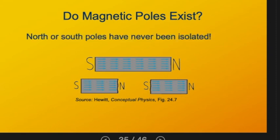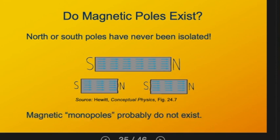It turns out that we've never been able to do that. That's not to say it definitely can't be done, but most theories of magnetism that physicists use nowadays indicate that it can't happen—that north and south poles are always intimately together.